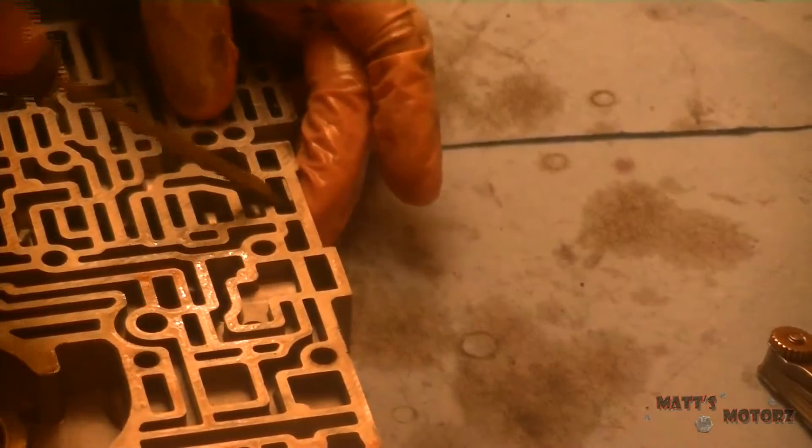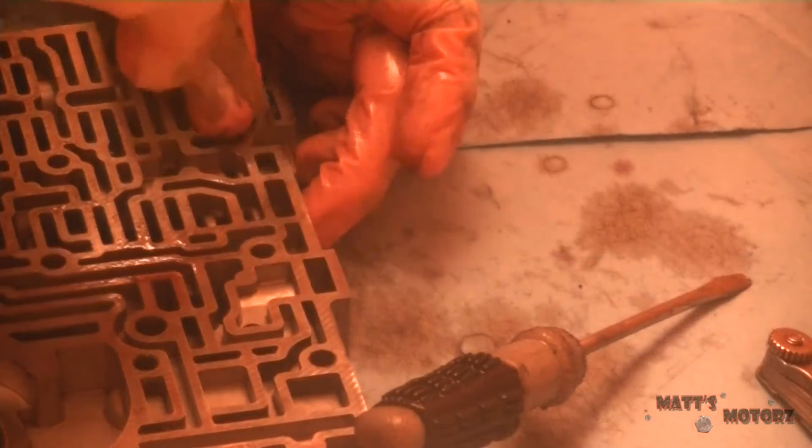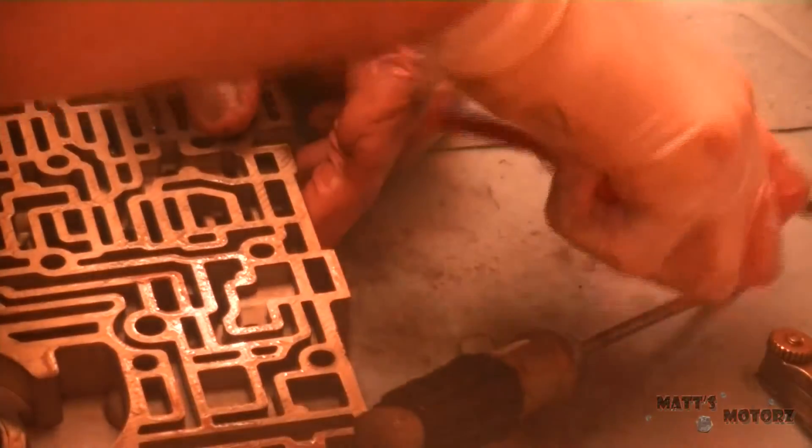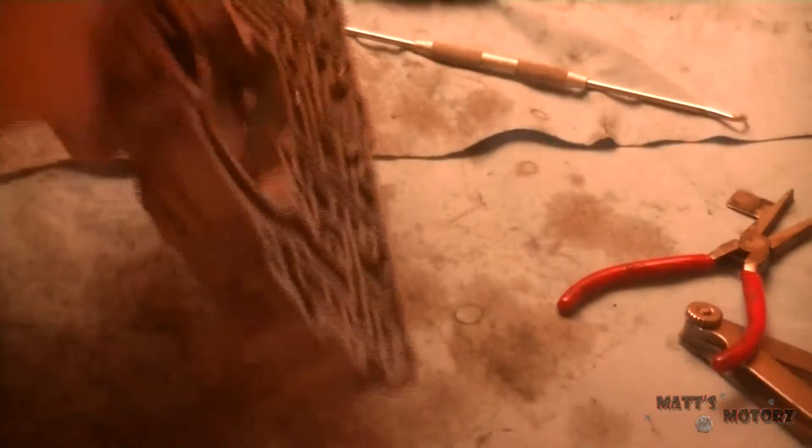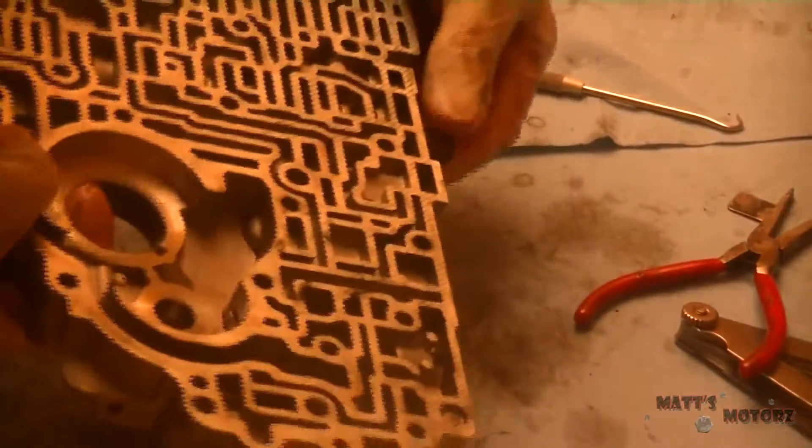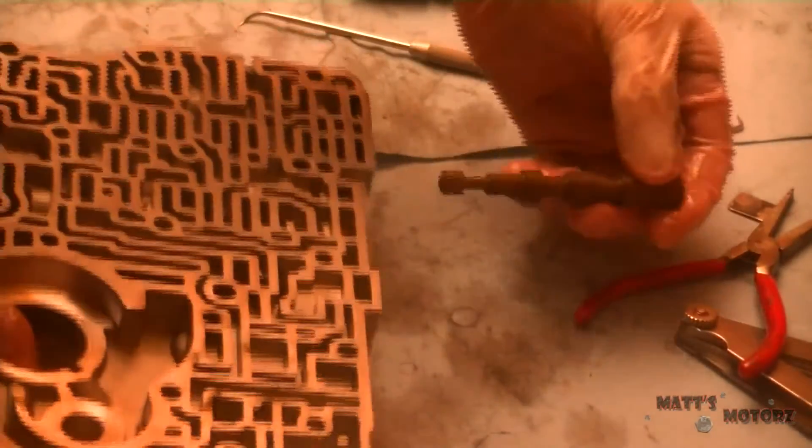This one's going to be the CPB valve. Take it out the same way as the other ones. That one you have to help along a little bit.